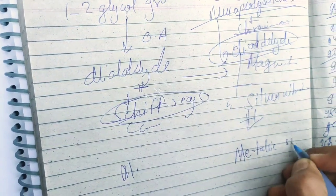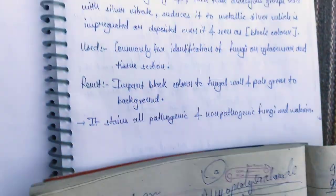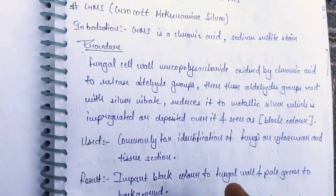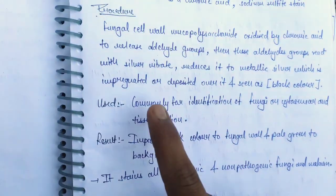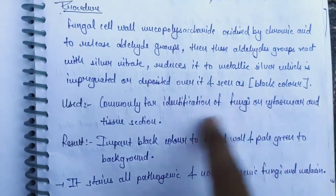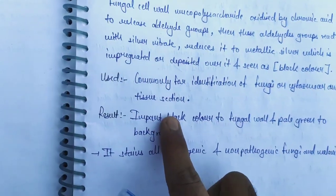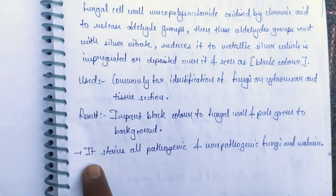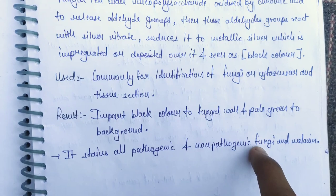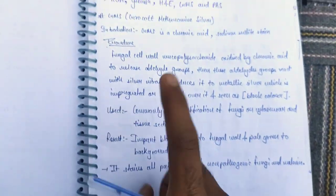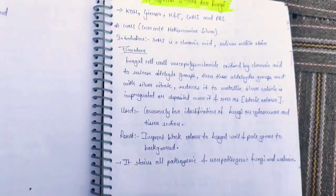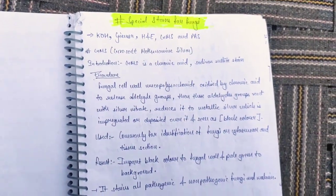The metallic silver deposits and we can see fungi in black color. GMS is commonly used for fungi in cytosmeers and tissue sections. The result is black color from the fungal wall and pale green background. GMS stains all pathogenic and non-pathogenic fungi and melanin.